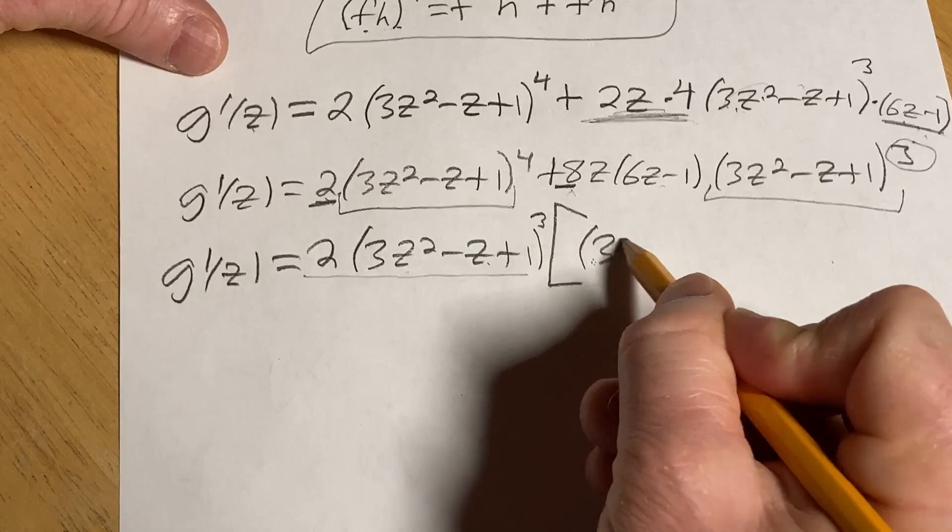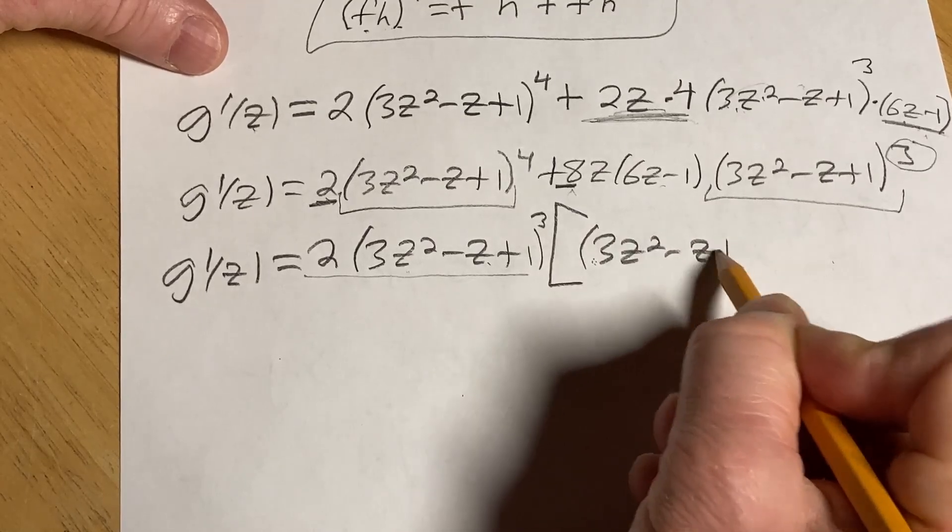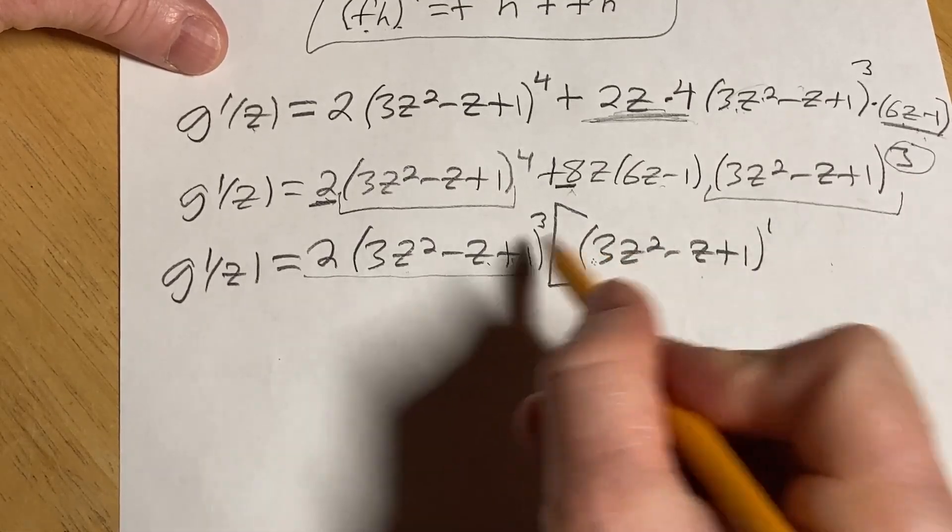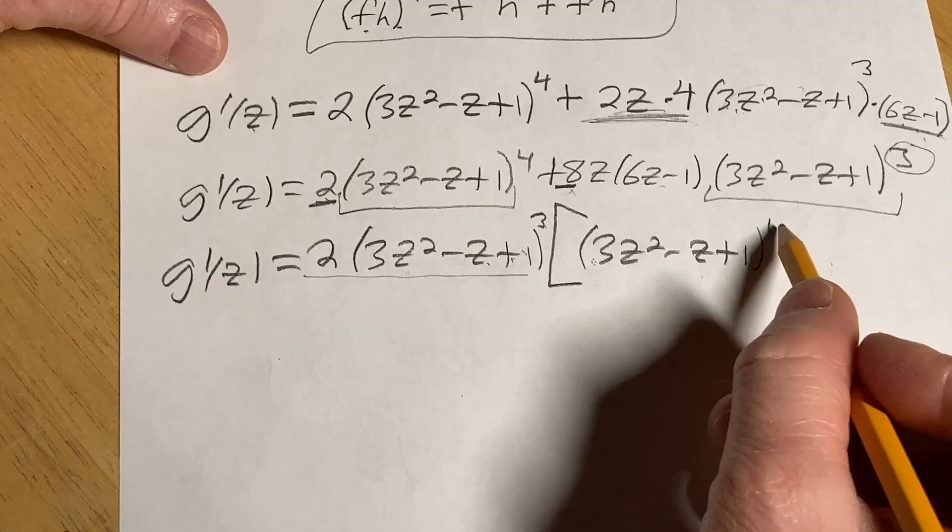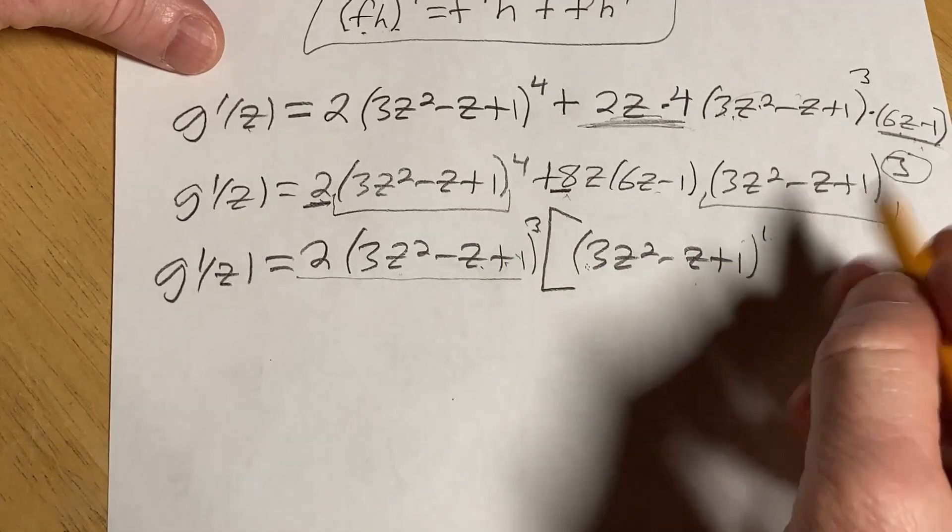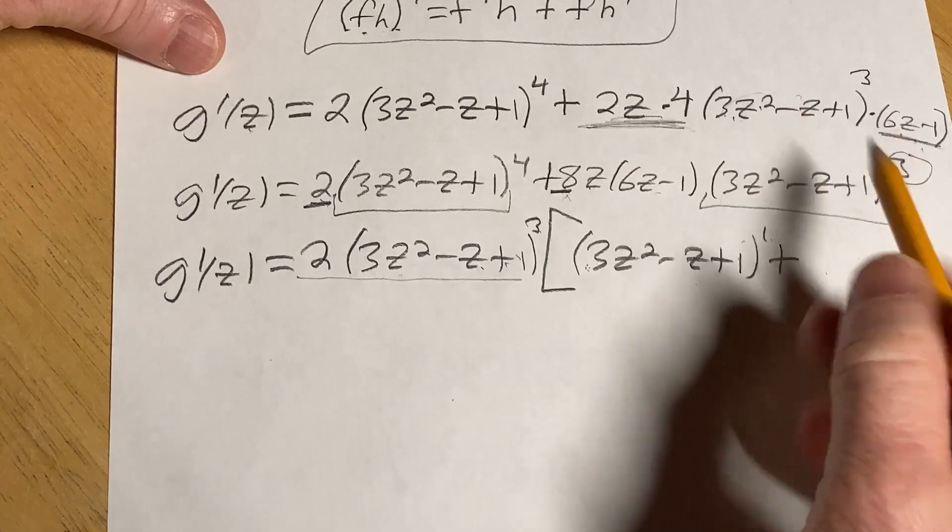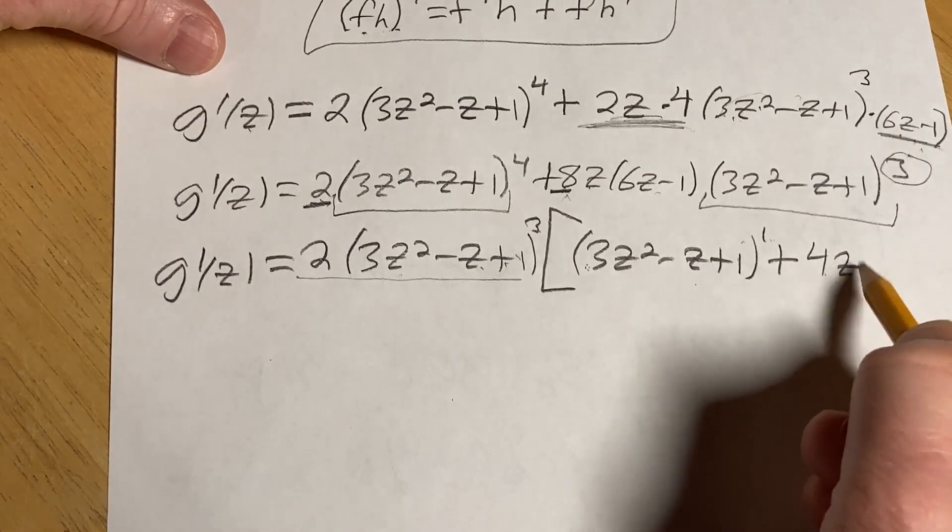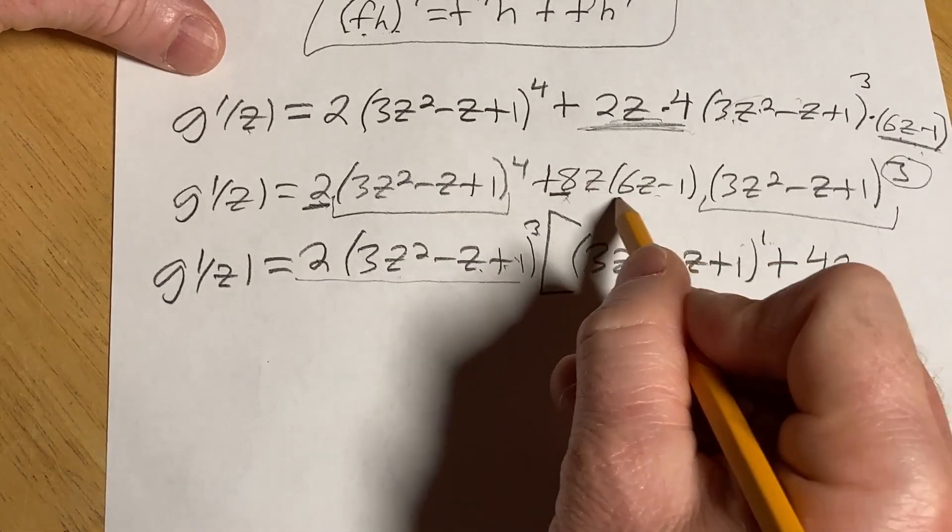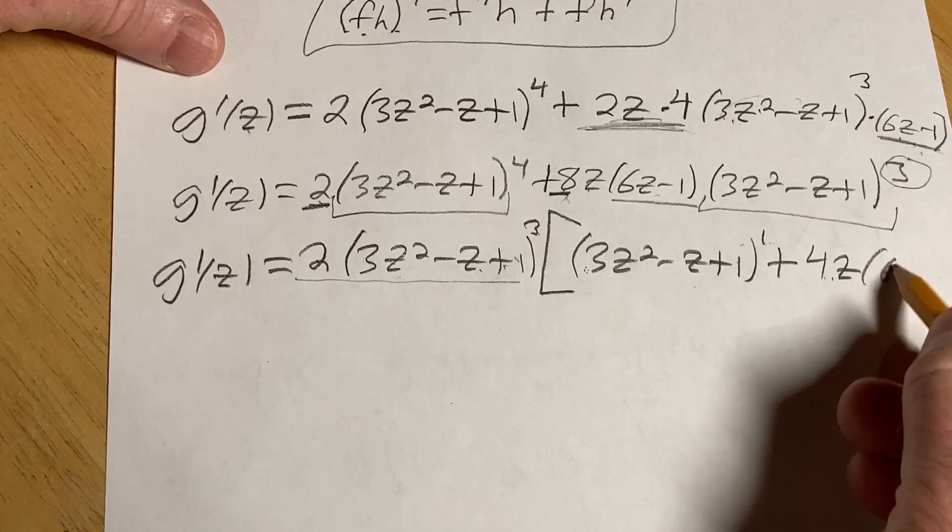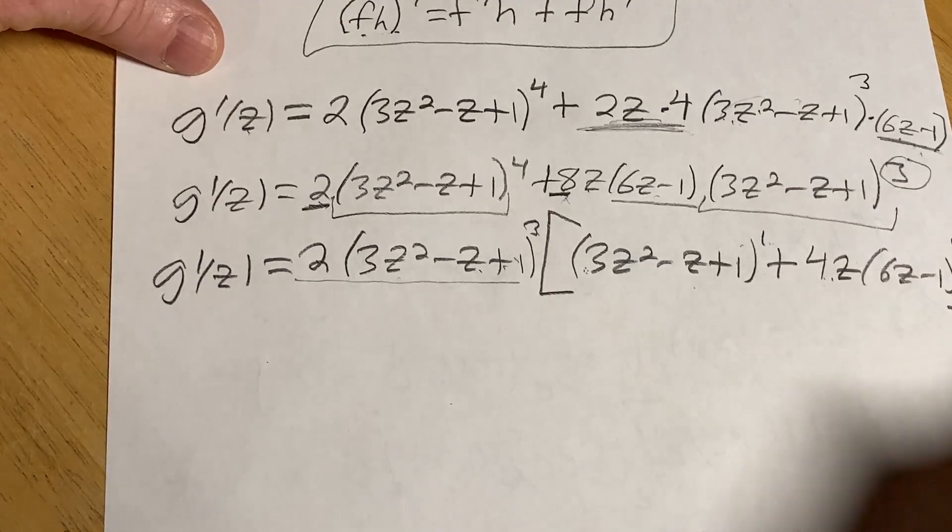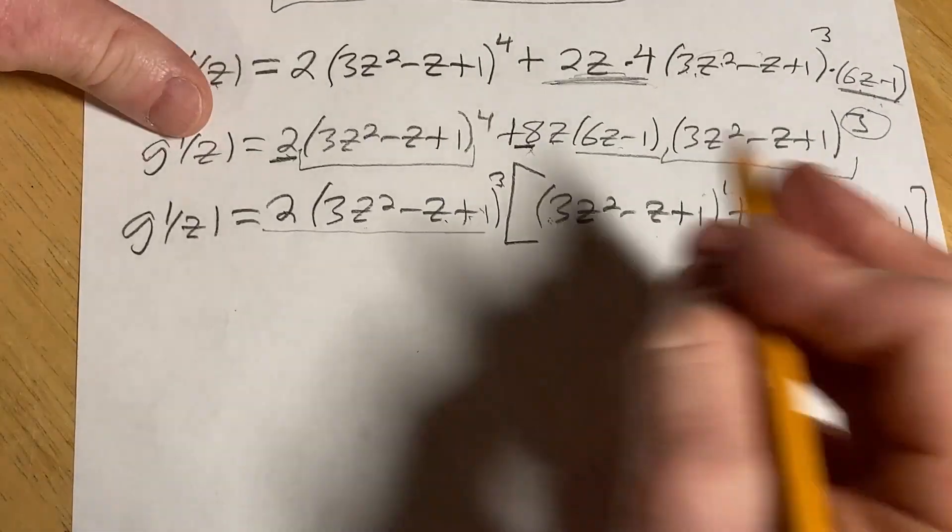We're basically missing 3z squared minus z plus 1 to the first power. Because when you multiply here, you add the exponents, right? 3 plus 1 is 4. Here we're missing a 4z, right? Because 4z times 2 is 8z. And we're also missing the 6z minus 1. Pretty cool factoring. Let's keep going.